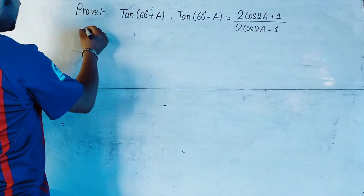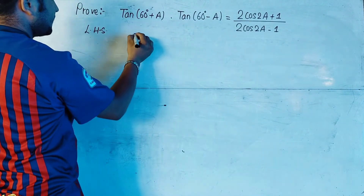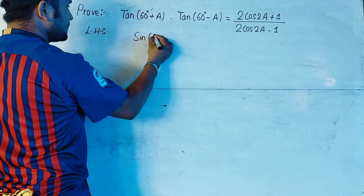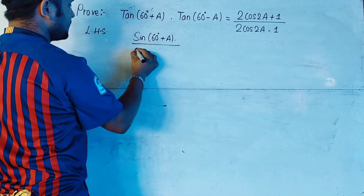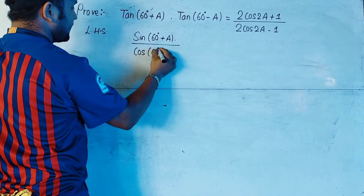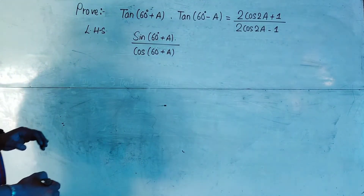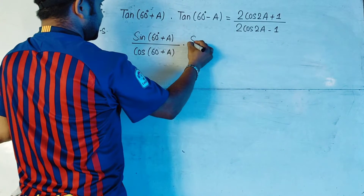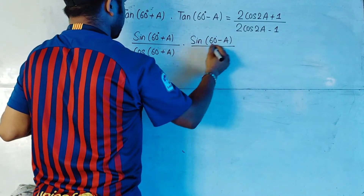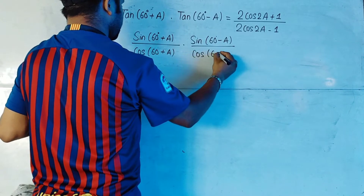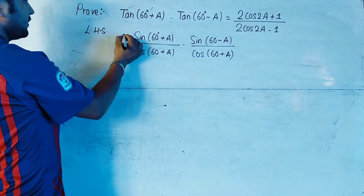Let us solve the problem from the left hand side. So tan(60+a) can be written as sin(60+a) by cos(60+a). Similarly, tan(60-a) will also be done in the same way: sin(60-a) by cos(60-a).